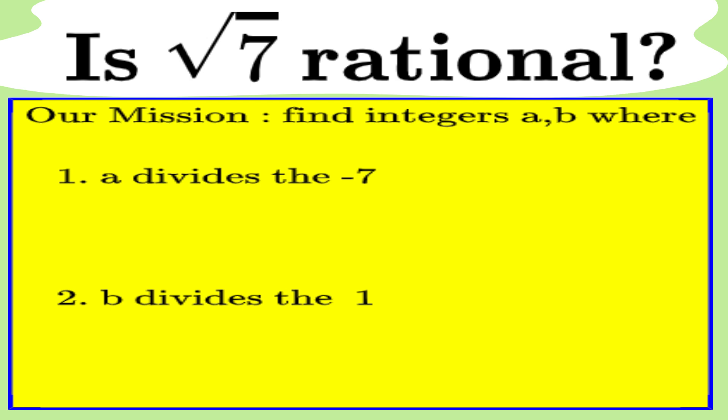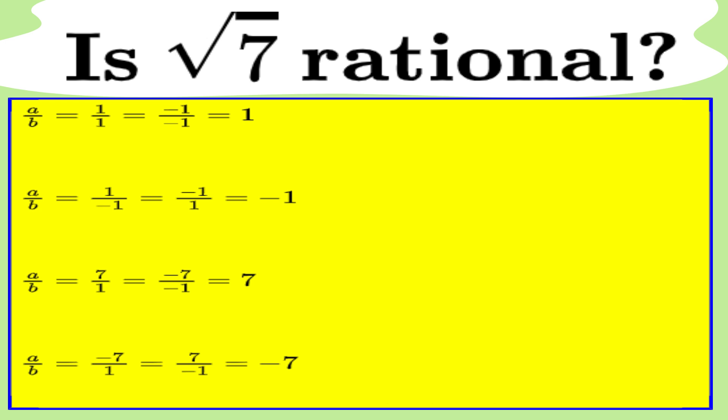Now, let's think about that for a second. The factors of minus 7 are, well, just plus or minus 1 and plus or minus 7, and the factors of 1. Oh, that's just plus or minus 1. So, the possible rational candidates for a root of this equation are plus or minus 1 and plus or minus 7.